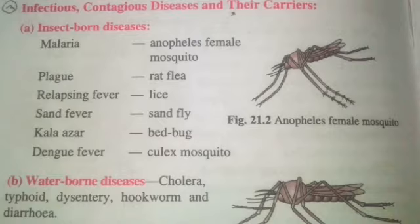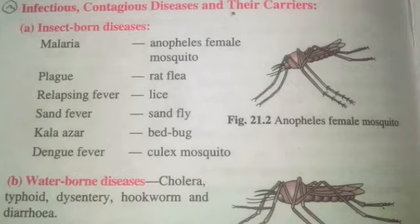The next disease is dengue fever. We are very well aware of this because there are a lot of awareness programs and campaigns to help us stay safe from dengue. Dengue is spread by the Culex mosquito, which breeds in stagnant clean water. If water is stored and not cleaned, mosquitoes grow there. After that, dengue fever spreads.